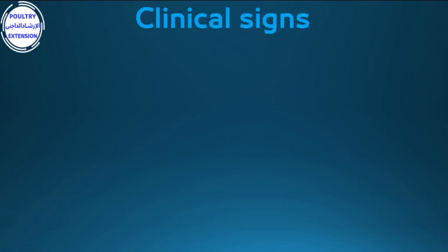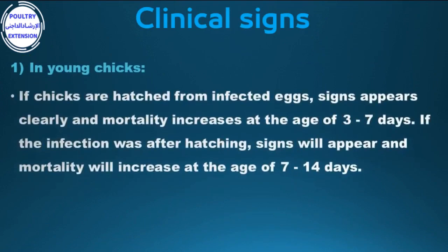Clinical signs in young chicks: If chicks are hatched from infected eggs, signs appear clearly and mortality increases at the age of three to seven days. If the infection occurs after hatching, signs appear and mortality increases at the age of seven to fourteen days.